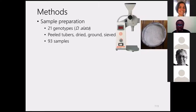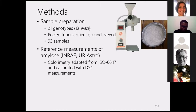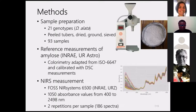To compare PLS and convolutional neural networks, we used 93 samples of flour from 21 genotypes of Dioscorea alata. First, we used the reference method to calculate the amylose content of these samples. Then each sample was passed through the NIR instrument to collect 1050 absorbance values from 400 to 2000 nanometers. This was done twice, giving us 186 spectra for calibration.